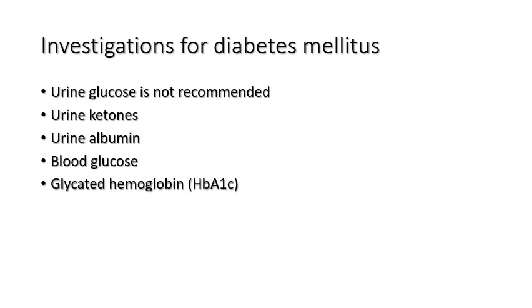Starting with this slide showing a summary of the important investigations commonly used in the field of diabetes mellitus. These investigations are used either in the diagnosis of disease, in the follow-up of the disease, or in detection of complications. We have urine-based investigations and also blood-based investigations. Urine glucose is commonly used by patients, but it is not recommended because it doesn't give the actual level of the plasma glucose. Urine ketones will be discussed in more detail later.